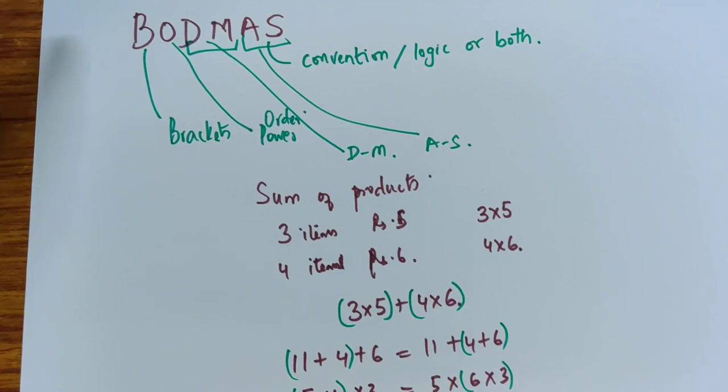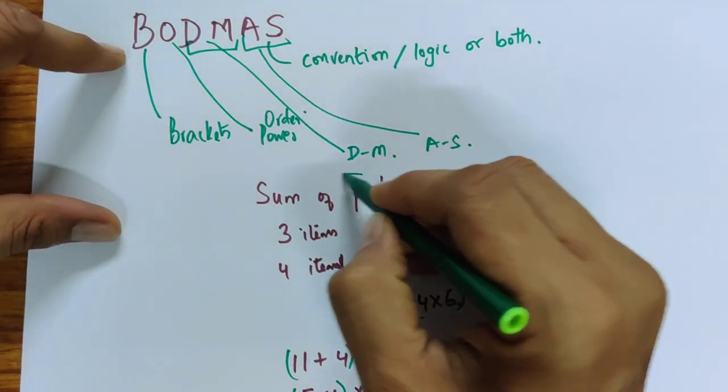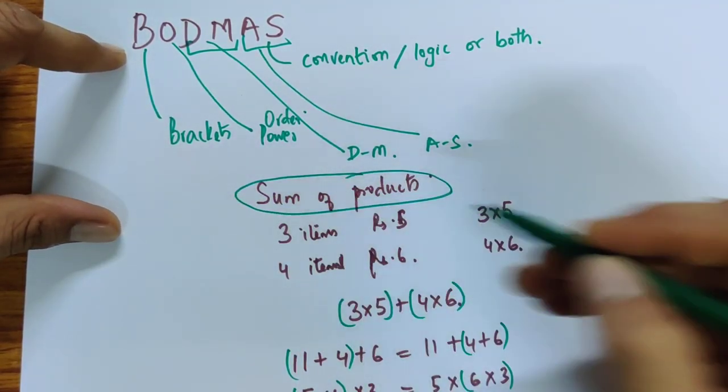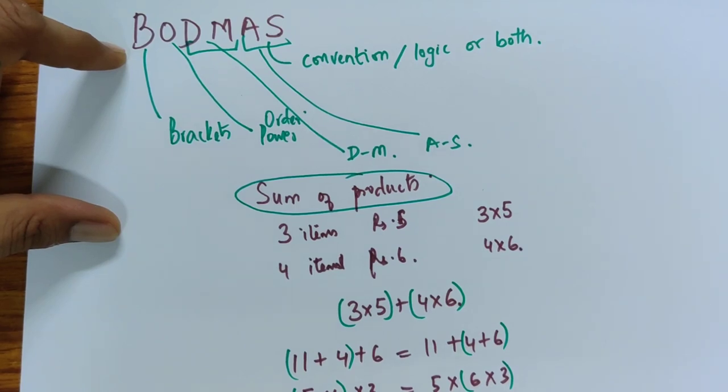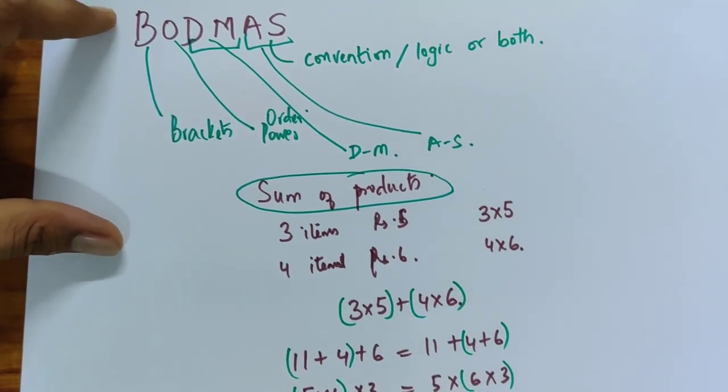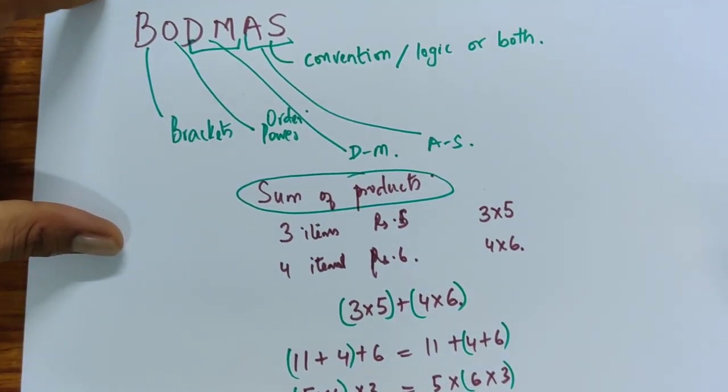But if you don't want to use so many brackets what is a more logical sequence and is there any logic to it? There is because often we encounter a sum of products and in order for a sum of products to make sense it is that you do the products first and then add the sums.